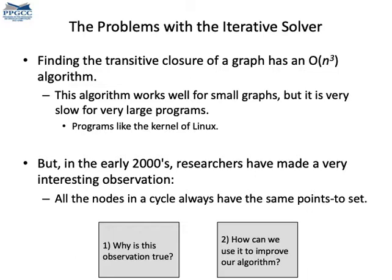But since the early 2000s, people have realized that this algorithm can be greatly improved in terms of speed if we find and collapse cycles. Before we move on, think about it. Why can we collapse cycles in this kind of graph-based algorithm?